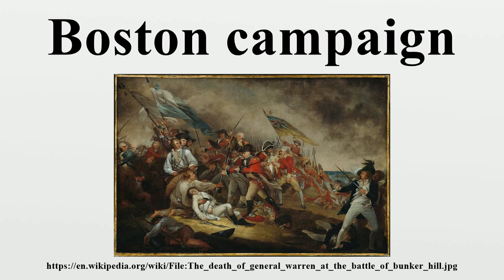By early March 1776, heavy cannons that had been captured at Fort Ticonderoga were moved to Boston, a difficult feat engineered by Henry Knox. When the guns were placed on Dorchester Heights in the course of one day, overlooking the British positions, the British situation became untenable. While General Howe planned an attack to reclaim the high ground, a snowstorm prevented its execution. The British, after threatening to burn the city if their departure was hindered, evacuated the city on March 17, 1776, and sailed for temporary refuge in Halifax, Nova Scotia. The local militias dispersed, and in April, General Washington took most of the Continental Army to fortify New York City, marking the start of the New York and New Jersey campaign.